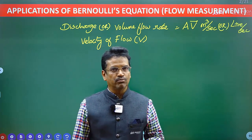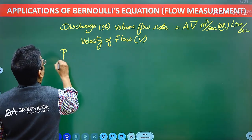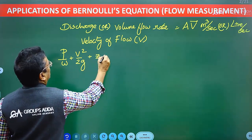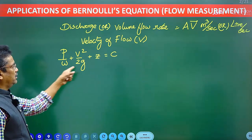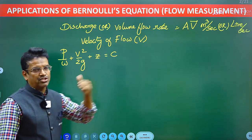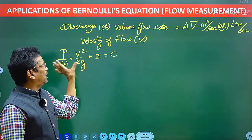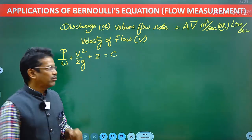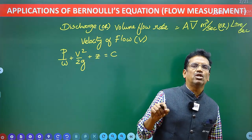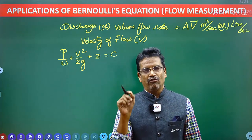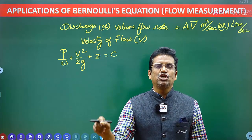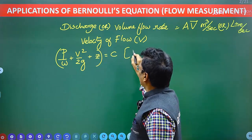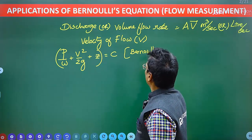Now, Bernoulli's equation has three independent energy components: pressure head, velocity head, and potential head or datum head. The sum of these three heads is constant if there is no loss of head between two sections. Head means energy of the flowing fluid per unit weight. Energy units are joules; head units are meters. This sum being constant is Bernoulli's equation — the law of conservation of energy.